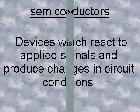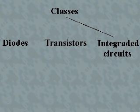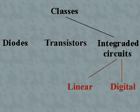Semiconductor devices can be divided into three broad classes: diodes, transistors, and integrated circuits or ICs. Integrated circuits can in turn be classified as linear or digital.